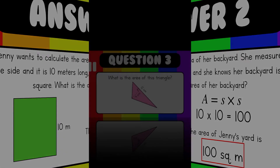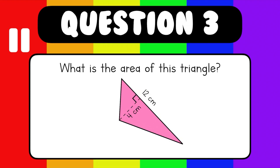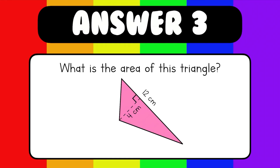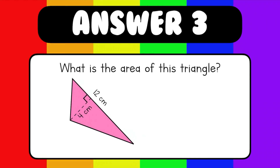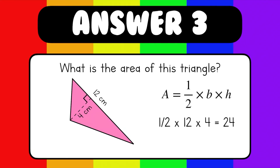Are you ready for the last question? Question 3: what is the area of this triangle? Don't forget to pause the video. We have to remember that even though this triangle is rotated, the base and the height are still the same. Our base is 12 centimeters, and our height is 4 centimeters, shown by the dotted line. Using our formula — one half times base times height — we plug in our numbers: one half times 12 times 4, which is 24. Since the triangle is measured in centimeters, our final answer is 24 square centimeters.